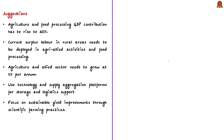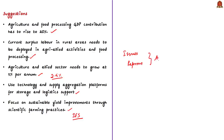The agriculture and food processing GDP contribution has to rise to the level of 20%. The current surplus labor in rural areas needs to be deployed in agri-allied and food processing activities. Agriculture and its allied sectors need to grow at 5% per annum, compared to the present rate of about 2.5%. Using technology and supply aggregation platforms for storage and logistic support is also needed. Focus should be on sustainable yield improvements through scientific farming practices such as integrated farming systems, to double farmers' income by 2022.